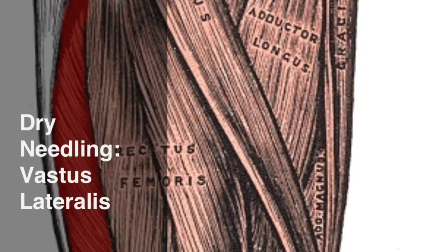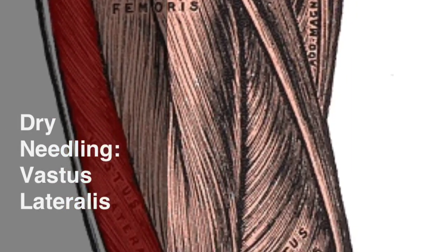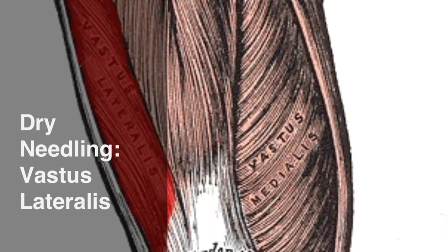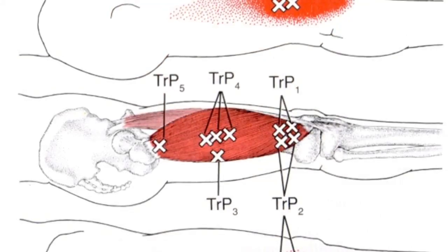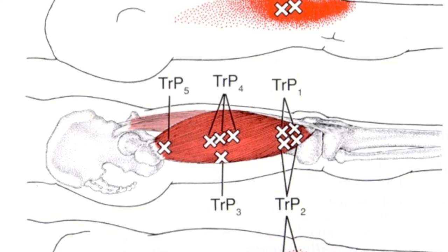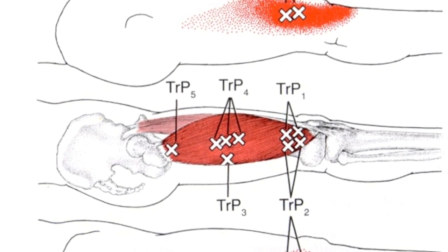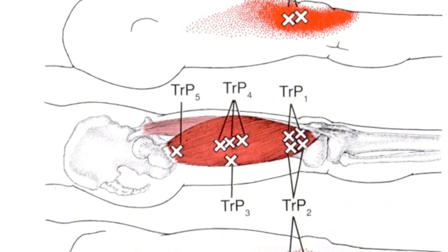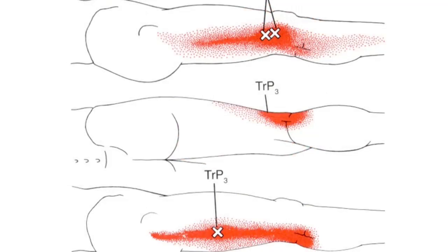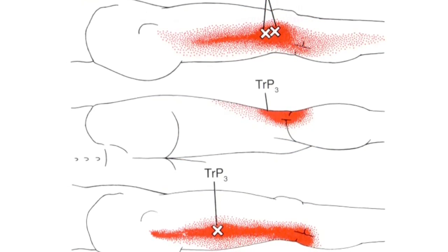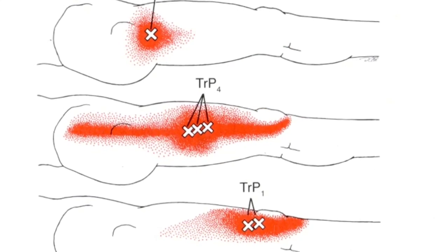This video addresses some of the dry needling techniques for the quadriceps muscle, vastus lateralis. As the largest muscle of the quadriceps group, the vastus lateralis has the greatest number of known trigger points. These trigger points are known to refer pain throughout the entire length of the lateral aspect of the thigh, from the iliac crest to the midpoint of the lower leg.